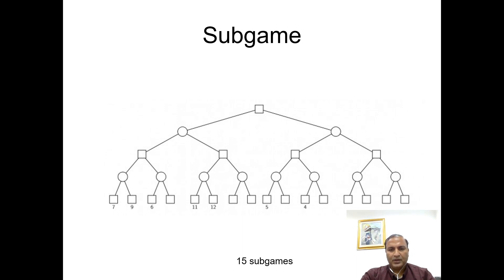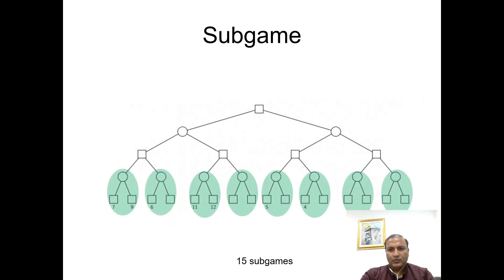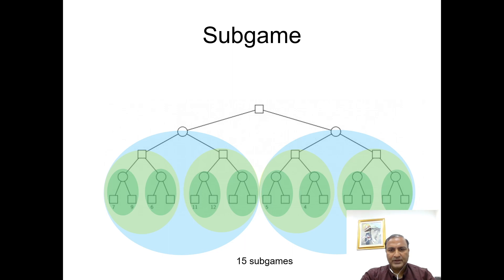Now let us try to find sub-games in a larger game tree. Starting from the lower level, there are eight sub-games. Then there are four more sub-games at the next level, and two more games above that. Finally, the whole game is also a sub-game, so in total it adds up to 15 sub-games.